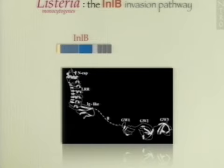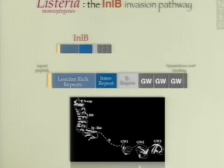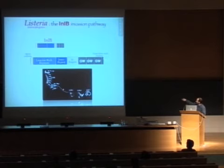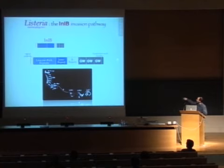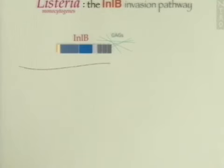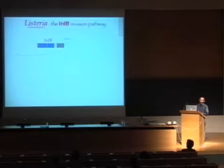InlB is an extended molecule characterized by the presence of leucine-rich repeats in its N-terminal domain, which is a module involved in protein-protein interaction. The protein also presents GW domains in its C-terminal domain, which are involved in the interaction of this protein with the bacterial cell wall. However, this interaction is not covalent, and the protein can be released from the bacterial cell wall, so we can find soluble InlB interacting with cells.